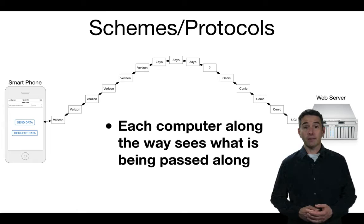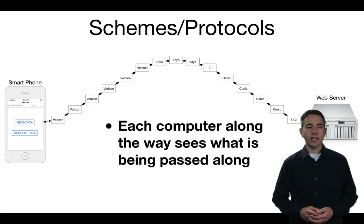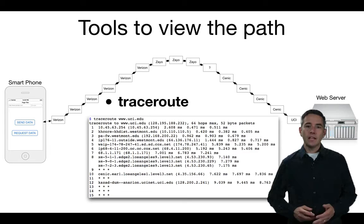On the other hand, a lot of web surfing is fairly innocuous. Checking a restaurant menu or checking traffic conditions generally aren't particularly critical or secret, so encrypting them isn't really that important. If you're interested in seeing the path your packets are taking, you can use a tool like traceroute.